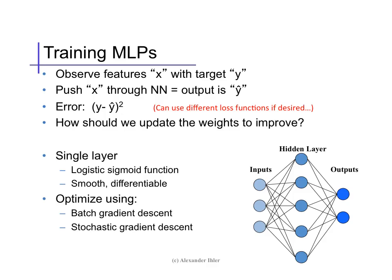Recall our neural network model. We observe some features x in the input layer, which are used to compute the value of a collection of hidden nodes. These hidden nodes then become inputs for the next layer, and so on, to a possibly vector-valued output layer y-hat.